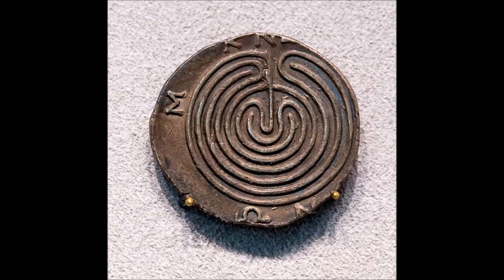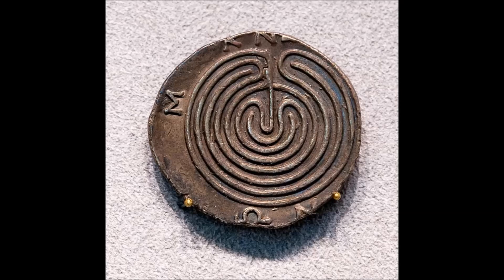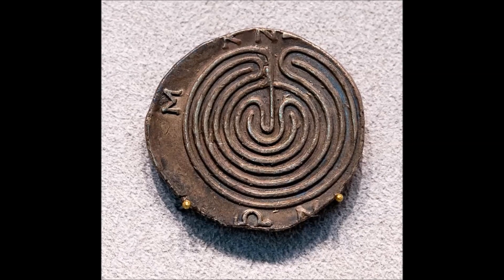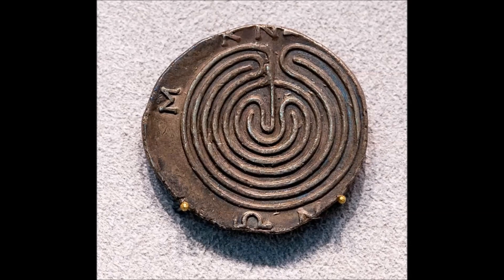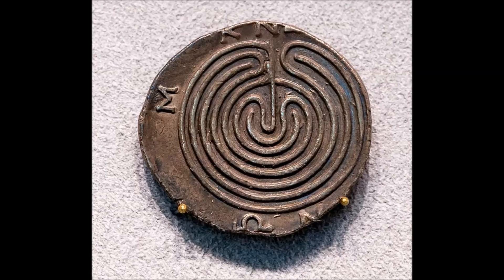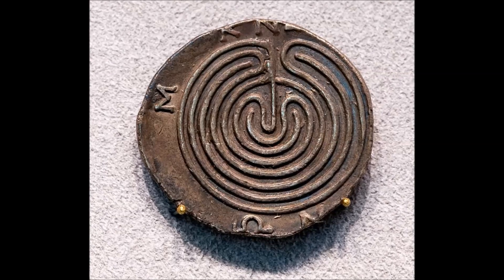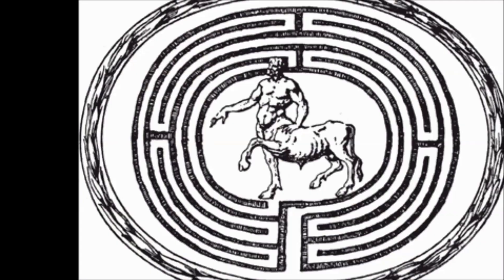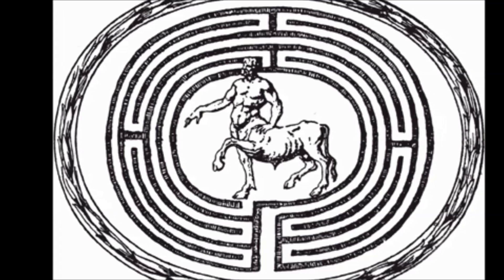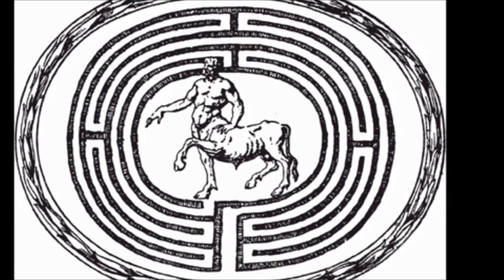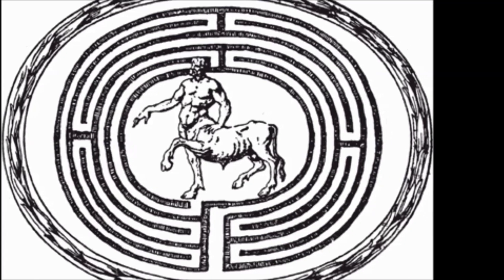Despite early Cretan coins showing branching patterns, the classical representation of the labyrinth on coins from 430 BC onward featured a single-path, non-branching design. This contradicted the logical and literary descriptions of the Minotaur being trapped in a complex branching maze.